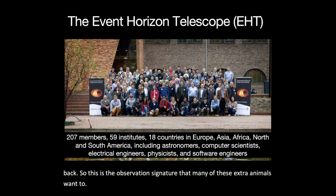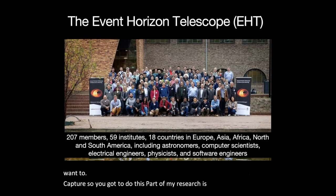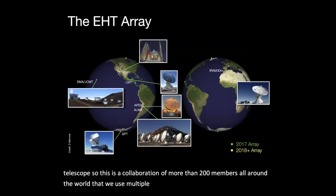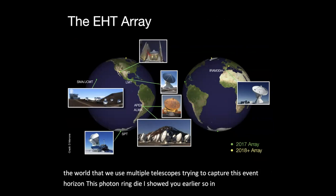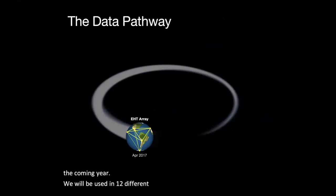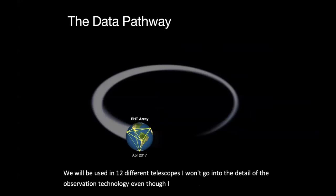So in order to do this, part of my research is with the event horizon telescope. So this is a collaboration of more than 200 members all around the world that we use multiple telescopes, trying to capture this event horizon, and this photon ring that I showed you earlier. So in 2017, we use eight telescopes all around the world to form a big array. And in 2018, in the coming year, we will be using 12 different telescopes. I won't go into the detail of the observation technology, even though I actually spent most of my time in the last few years working on the data.